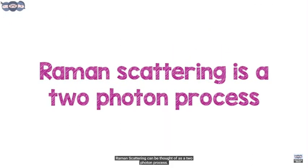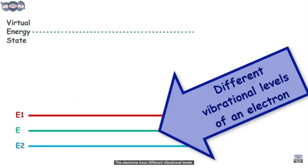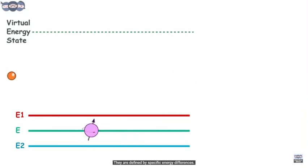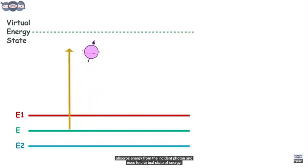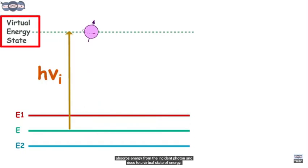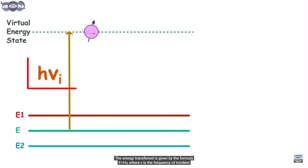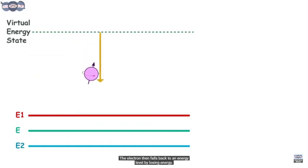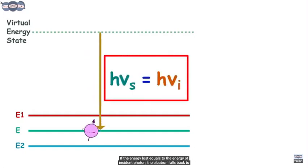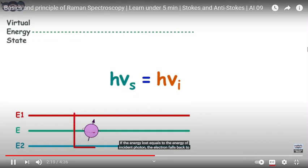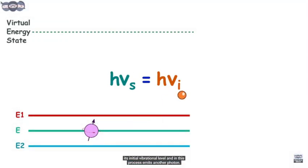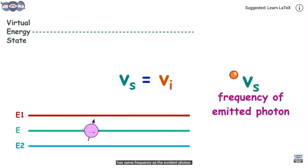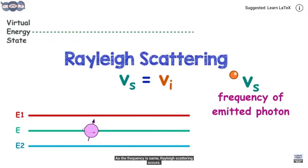Raman scattering can be thought of as a two-photon process. Electrons have different vibrational levels defined by specific energy differences. When incident monochromatic light interacts with an electron in the sample, the electron absorbs energy from the incident photon and rises to a virtual state of energy, given by E = hν, where ν is the frequency of the incident photon. The electron then falls back to an energy level; if the energy lost equals the energy of the incident photon, the electron returns to its initial level and emits a photon of the same frequency — this is Rayleigh scattering.